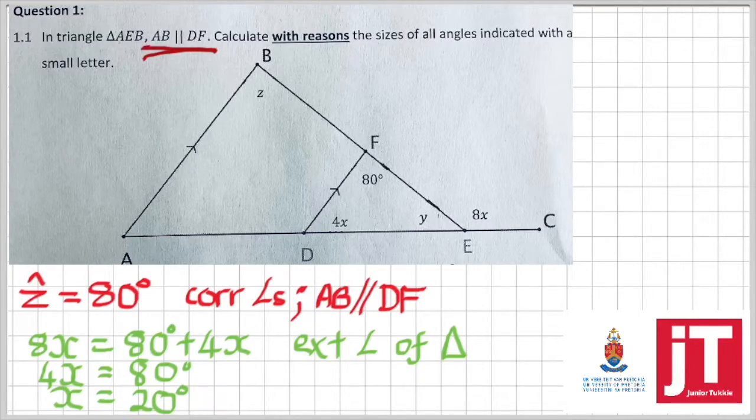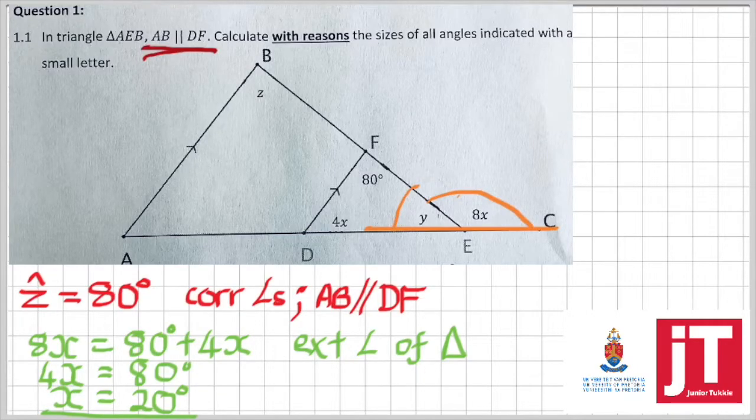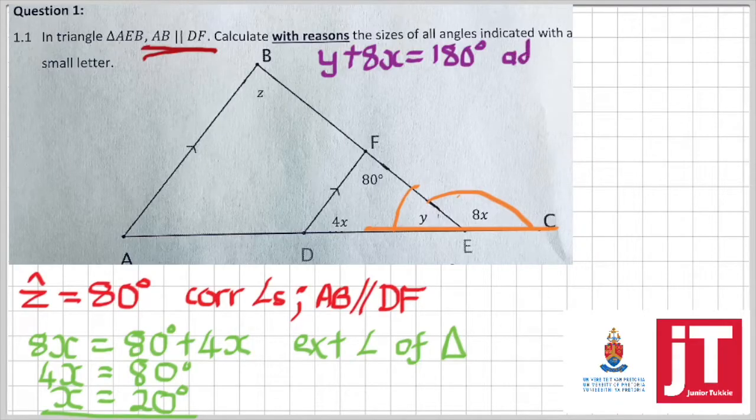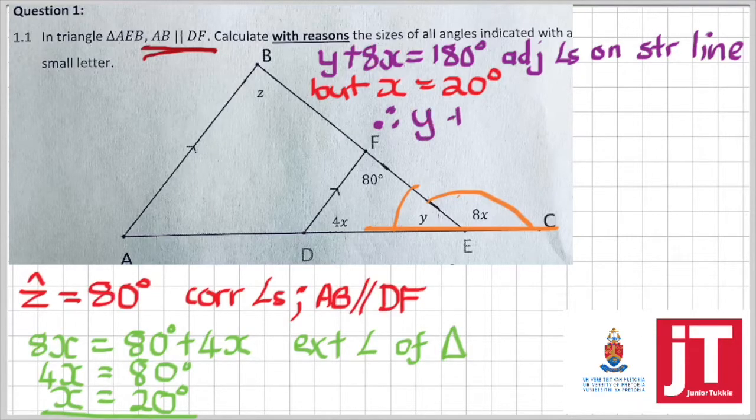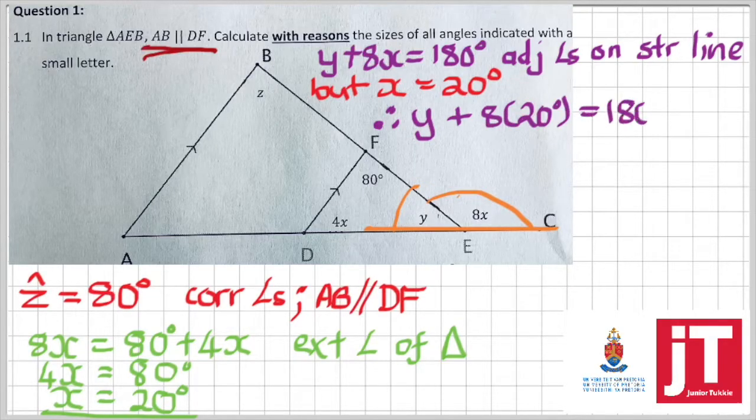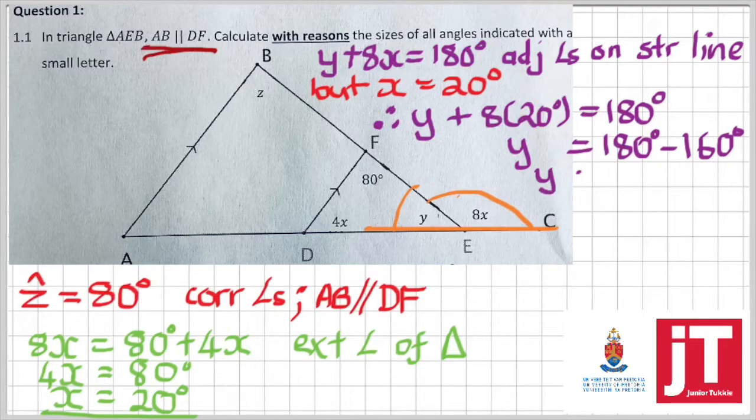Now that we know that x is equal to 20 degrees, we now want to calculate our y. But I'm going to make use of the straight line DEF. We can see that 8x plus y must give us 180 degrees, and that's from theory. Adjacent angles on a straight line at 180. So, my first statement would be y plus 8x must give me 180 degrees. The reason for that is adjacent angles on a straight line. But, we know that our x value, we got it to be x is equal to 20 degrees. So, immediately, I can substitute that x value, the 20 degrees, in place of x, so that I have the following equation. y plus 8 times 20 degrees is equal to 180 degrees. Solving for y, I get my y to be 180 degrees minus 160 degrees, resulting in a y value of 20 degrees.